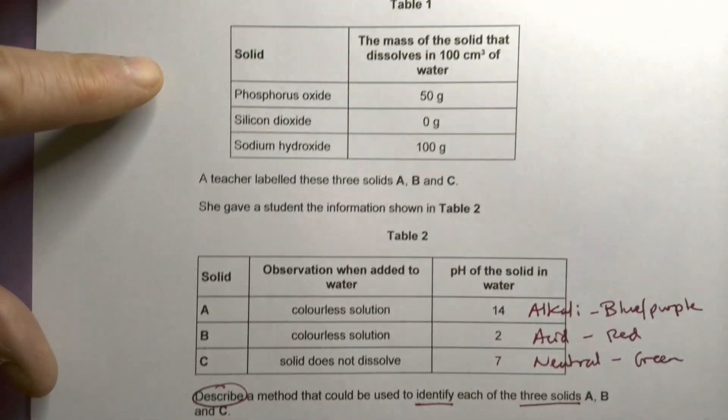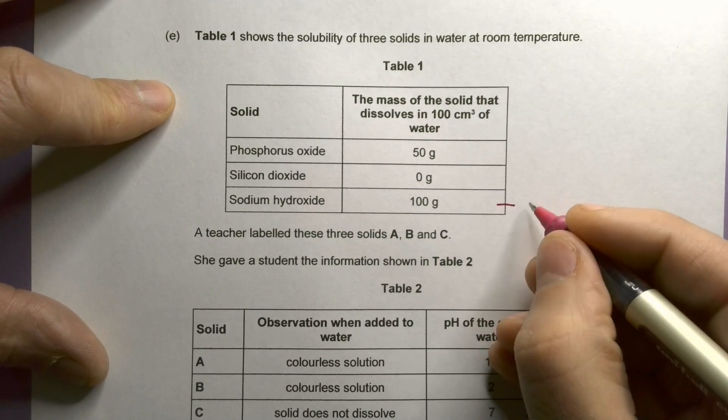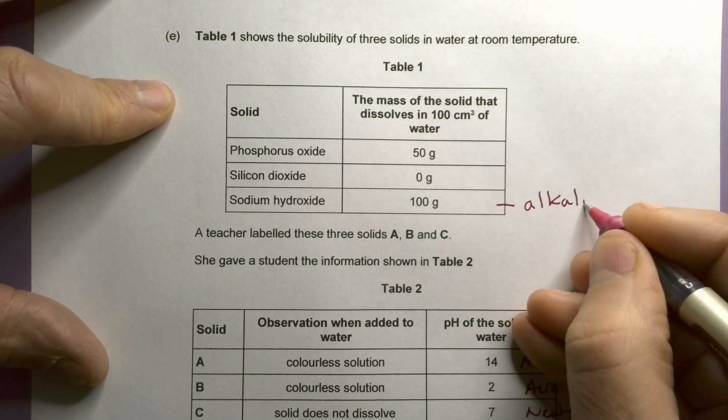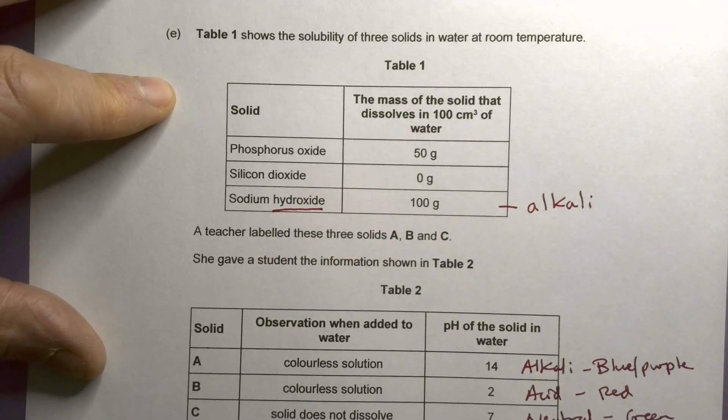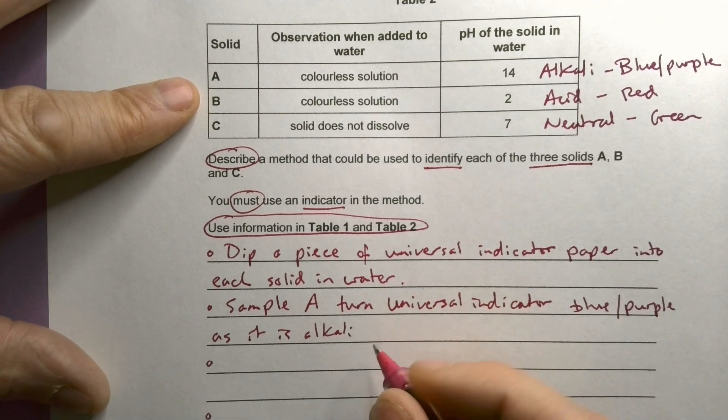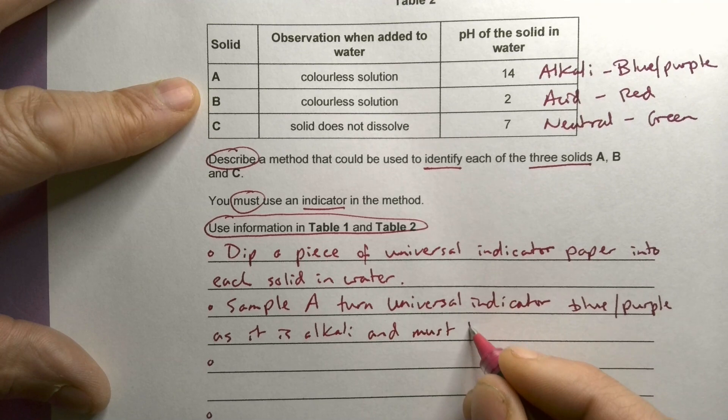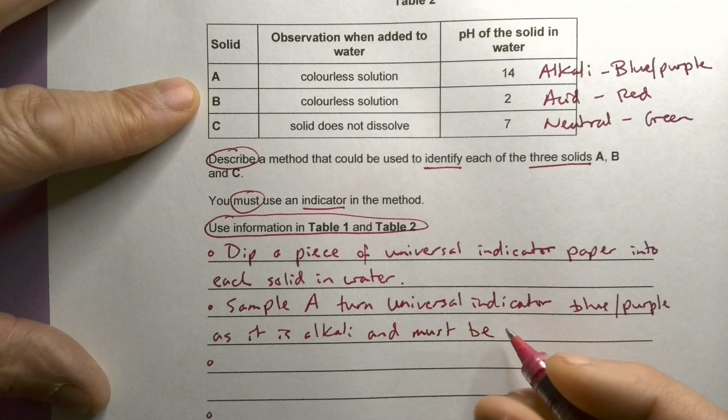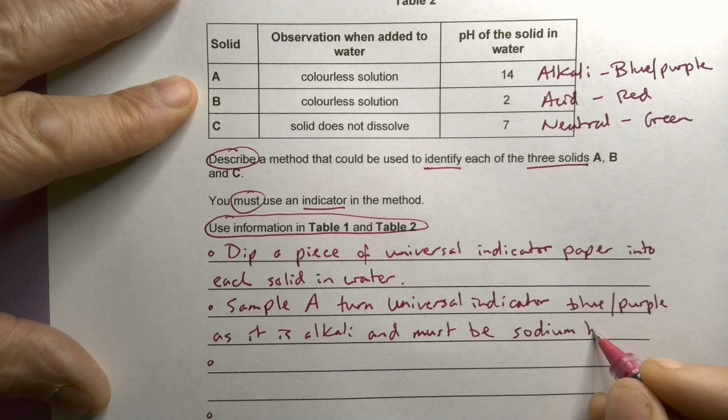And I know if I look here, which of these do I know is alkali? Well, I know sodium hydroxide, very famous alkali. Anything hydroxide is always going to be alkali. So that's going to be an alkali. Okay, so it's alkali and must be sodium hydroxide. So I've named one.